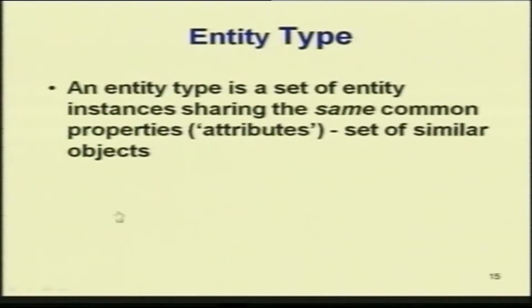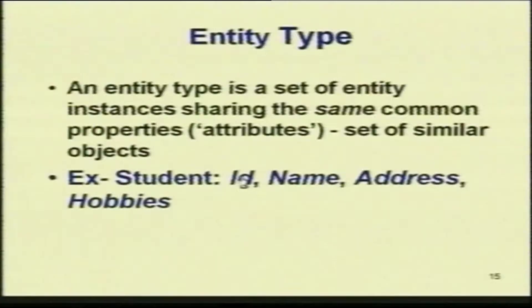The entity type is a set of entity instances sharing the same common properties or attributes. For example, a student entity can have ID, name, address, and hobbies as its attributes — this is the type. I can have another student entity in another relation having student ID, course, classes, or subjects taken.